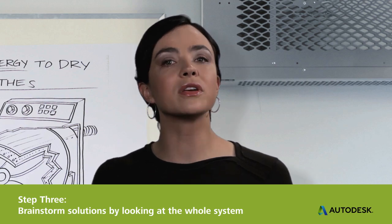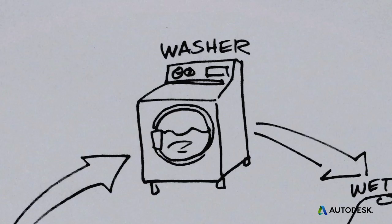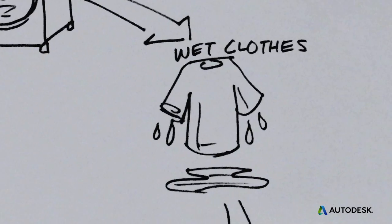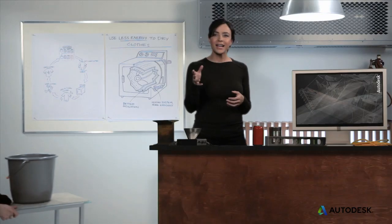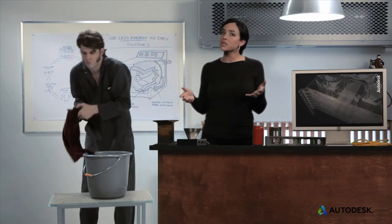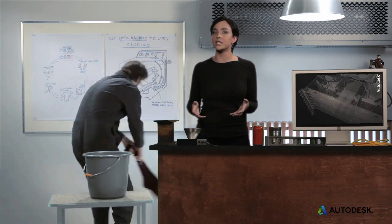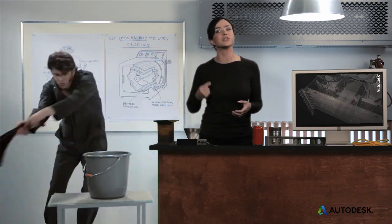Instead of making small improvements to one part of the clothes drying process, let's look for solutions by looking again at the whole system. Notice that the washing machine supplies the wet clothes to the dryer. The wetter the clothes are, the more energy they take to dry, right? Now we can ask new questions like, might we save energy by delivering the clothes to the dryer in a less wet condition? Well, a washing machine already shares in the drying process by spinning the clothes to a damp state with centrifugal force.